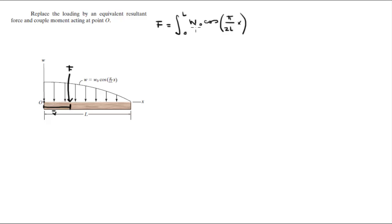Now look at the constants. W0 is a constant, L is a constant, L is a constant, pi is obviously a constant, dx.